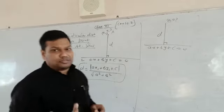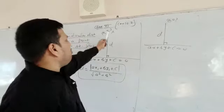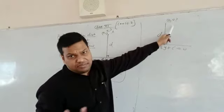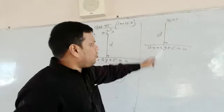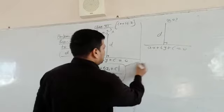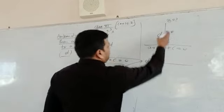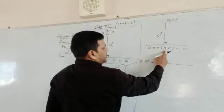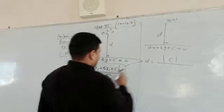Again the next situation is, if that point is a special point that can be an origin, then what will be the formula? The same thing is there, only it will be changed that if we put 0, 0 there.